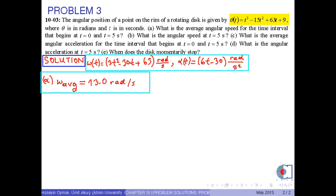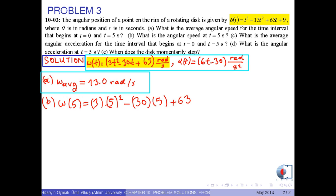In part b, we find the angular speed using the omega formula at time t equals 5 seconds. That is, omega(5) equals 3 times 5 squared minus 30 times 5 plus 63. Therefore, we obtain negative 12 radians per second.